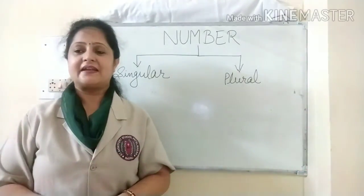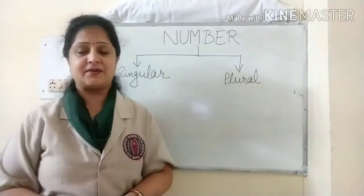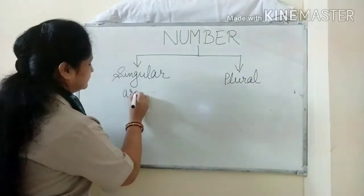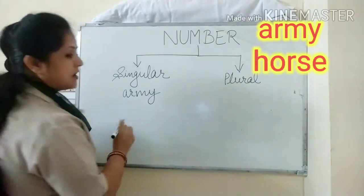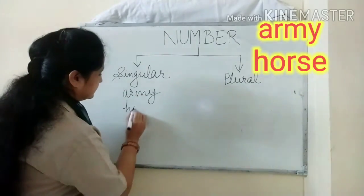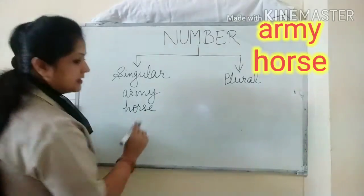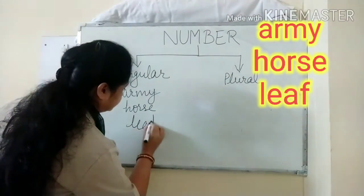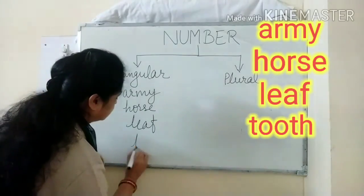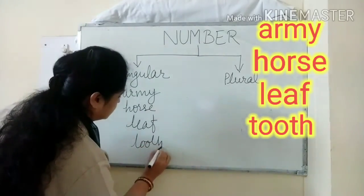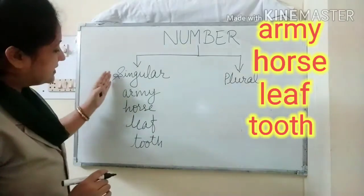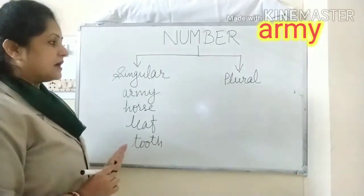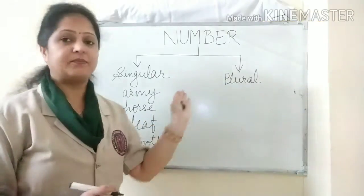Here are the examples of Singular Number. I am writing here: Army. These are the examples of Singular Number. Now next is Plural Number.